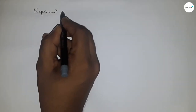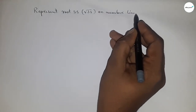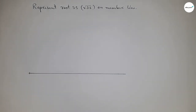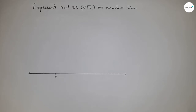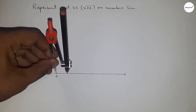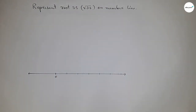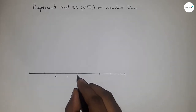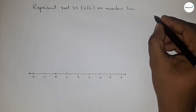Hi everyone, welcome to SSR Classes. Today we will learn how to represent root 35 on a number line. First, drawing a line of any length and marking the ends with arrows. Next, marking the starting number zero, then using a compass to mark unit lengths. This length is called unit length or one unit. Marking numbers: one, two, three, four, five, six and so on, and on the other side minus one, minus two and so on.